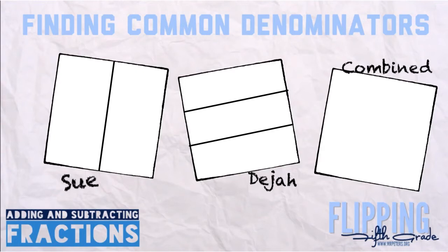Let's say two friends are making a cake. Sue wants to cut it in half, whereas Deja wants to cut it into thirds. You want to figure out a way to satisfy both of them so that Sue can cut it in half and Deja can cut it in thirds. What you're really doing here is finding the least common multiple.